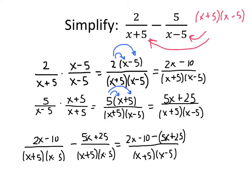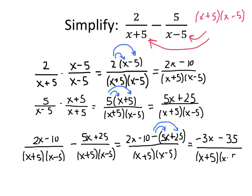We're not quite done because we should simplify that numerator. Since we've got a minus sign next to those parentheses, we need to distribute the negative. So we're going to have minus 5x and minus 25. On the top, 2x minus 5x is minus 3x, and negative 10 minus 25 is negative 35. All over our common denominator, (x plus 5) times (x minus 5). And we're done.